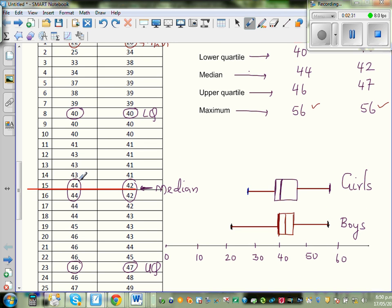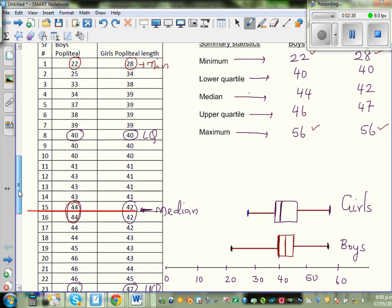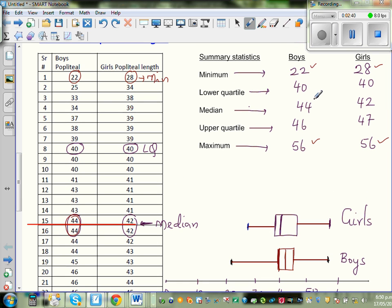So I have circled the 15th and the 16th data. If you take the average of 44 and 44 it is very interestingly 44. It doesn't make any difference. So in here interestingly the median is also same. So you add these two and divide it by two.